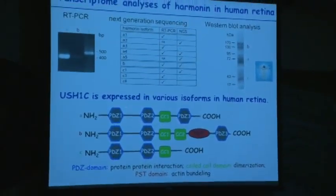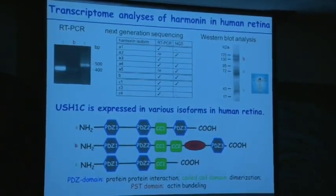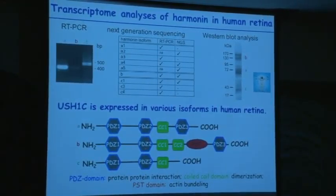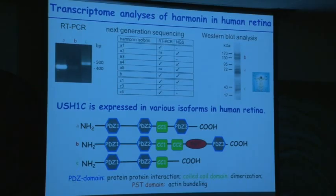Additionally, there are genes expressed in several isoforms, and we don't know which isoform is essential for restoring vision. Transcriptomic analysis revealed that harmonin, encoded by the USH1C gene, has at least nine different isoforms in the retina. These isoforms are grouped into three classes differing in their protein domain composition. All have PDZ domains which mediate protein-protein interactions and coiled-coil domains for dimerization, while the B isoforms specifically have a PST domain that induces bundling of actin filaments. It remains unknown which of these isoforms is essential for photoreceptor cell function.